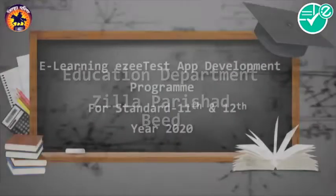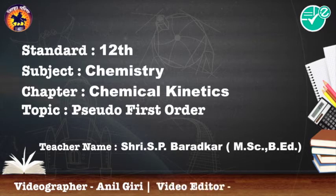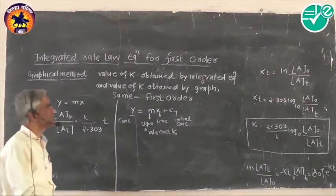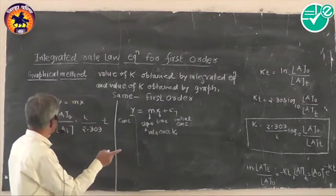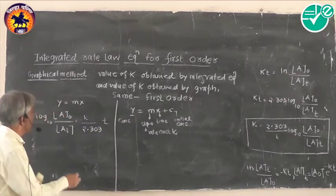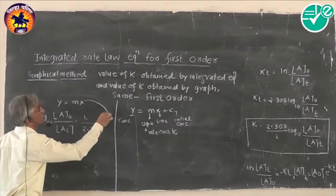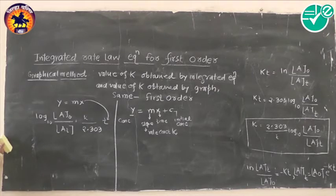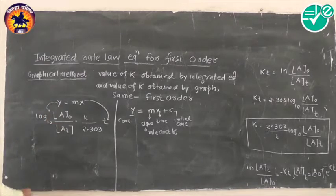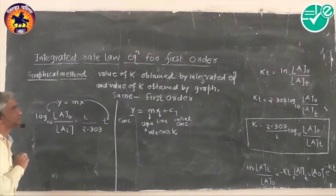The equation log(a0/at) to base 10 equals k upon 2.303 into t. Here the function x means time, with which we are studying the rate of reaction at different time intervals, and the function with respect to concentration. This equation is a straight line equation without a y-intercept.